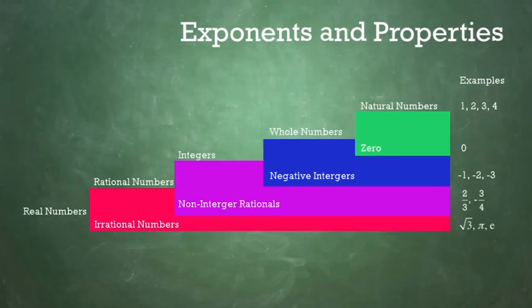The rational numbers could further be subdivided into the set of all integers and the set of all non-integer rational numbers. From this, we can make a very important generalization: all integers are rational numbers, but all rational numbers are not integers.